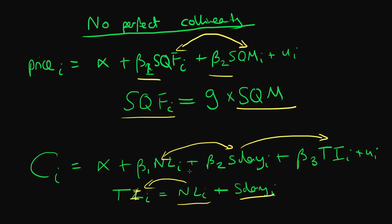Again, if you try and estimate this in some statistical program, the parameters beta 1, beta 2 and beta 3 aren't going to be identified. You will get some sort of error message because of this issue of perfect collinearity between regressors — which, another way of stating it, means that there is some exact relationship between the regressors.